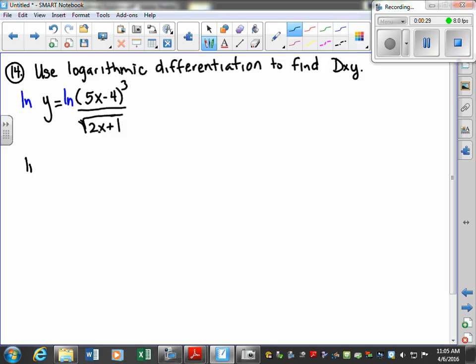Then I'm just going to carry this down. So the natural log of y is equal to, now that this is the natural log of this, let's go ahead and use some of our properties. So we could take, first of all, it's division. So we can rewrite these two terms as subtraction. So we will have natural log 5x minus 4.